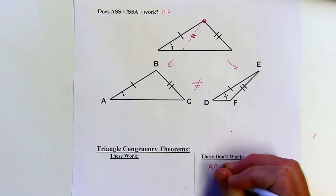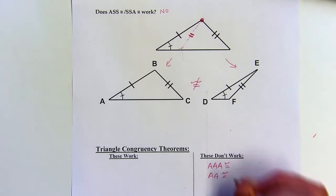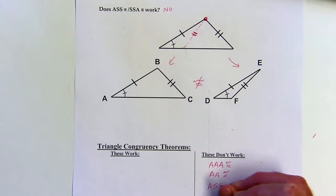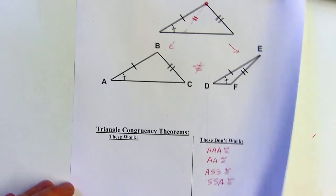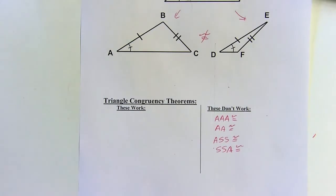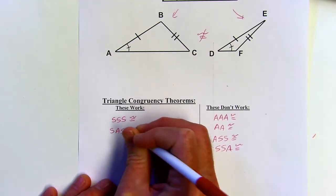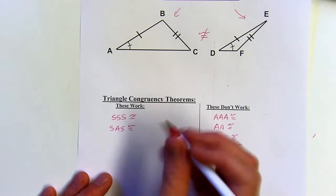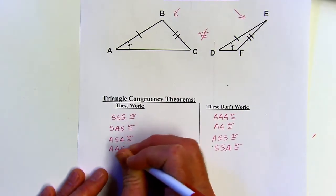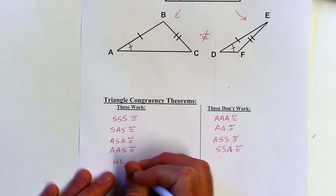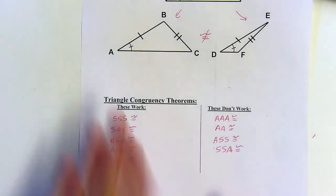So let's put the ones that don't work in our list — AAA, AA, ASS, and SSA don't work. But let's also make a list of all the ones that do work. We started with SSS and SAS. Today we had ASA and AAS. And then we also have HL — that's the hypotenuse-leg theorem, the only one not made of A's and S's. That's a comprehensive list of all the ones that work.